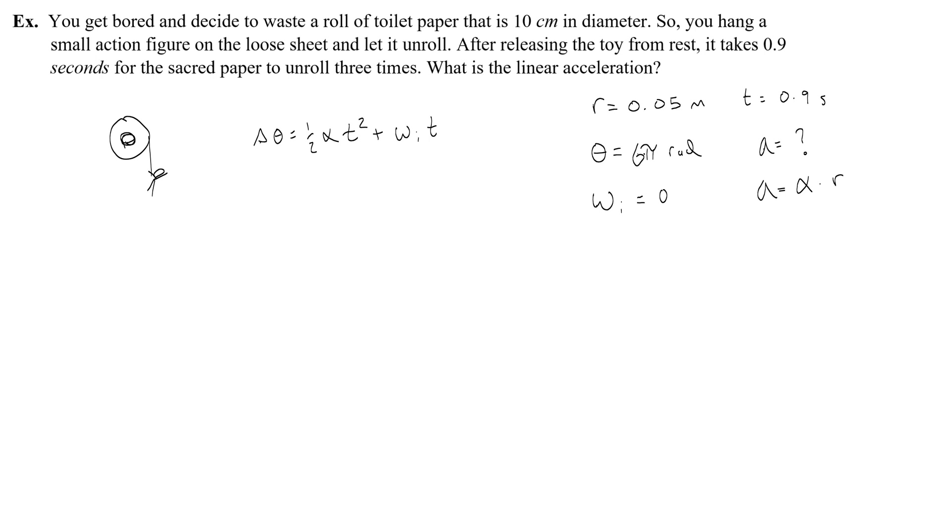Okay, the initial angular velocity is 0, so that whole term disappears. And now to find angular acceleration, I would multiply both sides by 2, and then divide both sides by t squared.